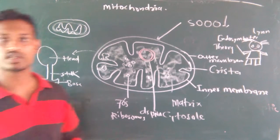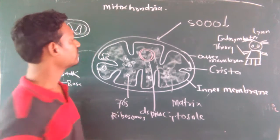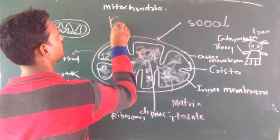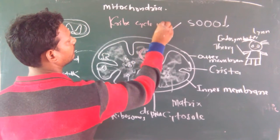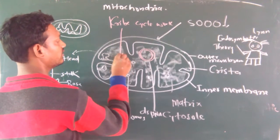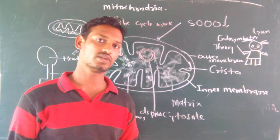These F1 particles are called F1 particles. The most vital question asked inside all competitive exams frequently is where the Krebs cycle works. It works inside the cytosol or matrix, inside the matrix of the mitochondria.